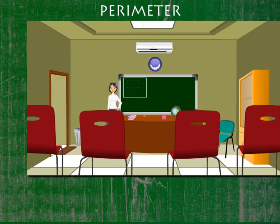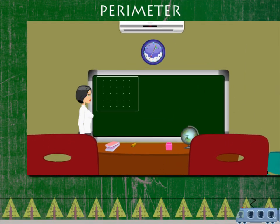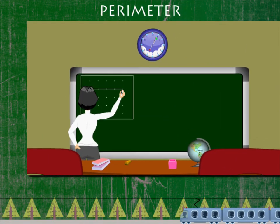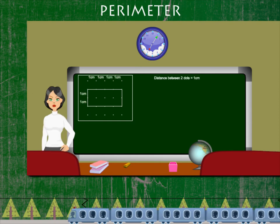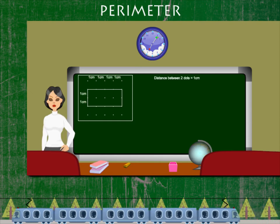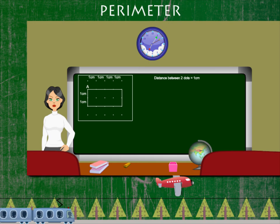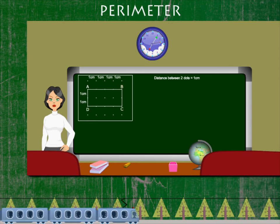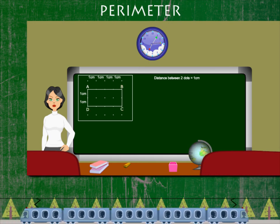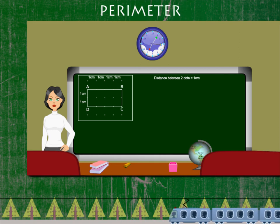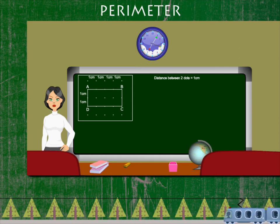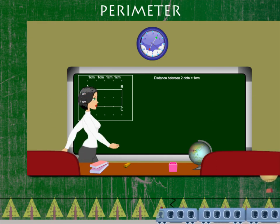Teacher Lucy makes a rectangular figure on the graphical port and labels the corners as A, B, C, and D. If you add the length of all the sides of this figure, it is called the perimeter.